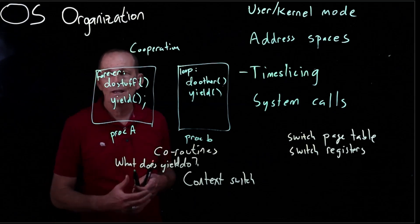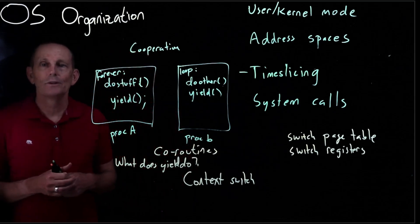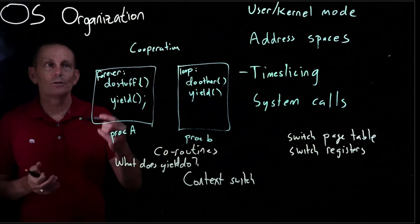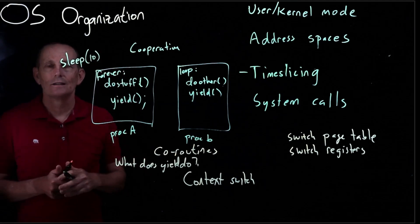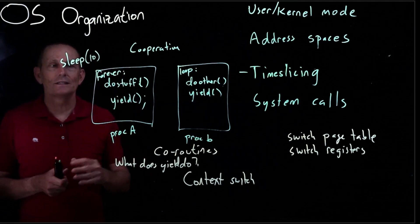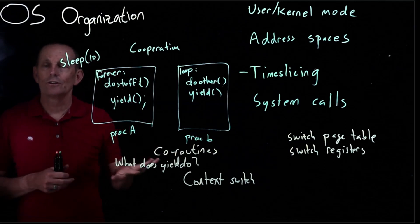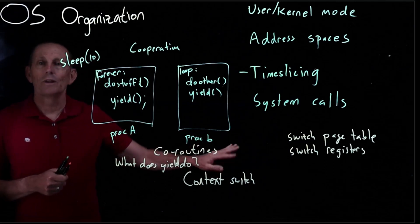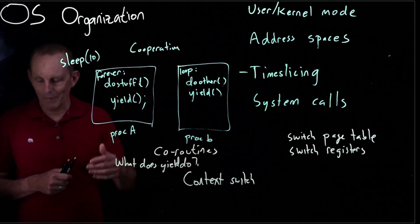Even in a preemptive multitasking case there are calls you can make to give up the processor. For instance you can call sleep and say I'd like to sleep for 10 seconds. So what that does basically then is calls the kernel. The kernel says okay we're not going to run your process for 10 seconds. We'll run this other stuff and when we're done with those 10 seconds then we'll come back to you.